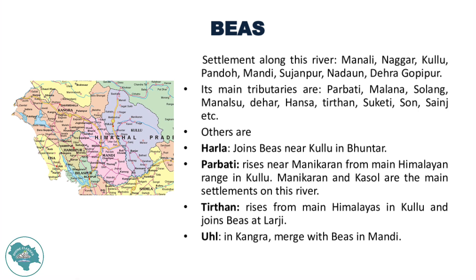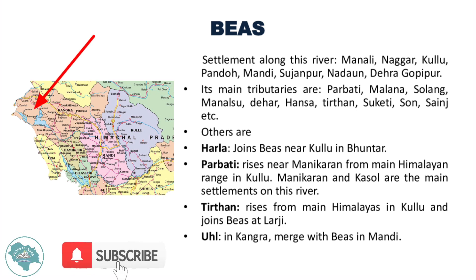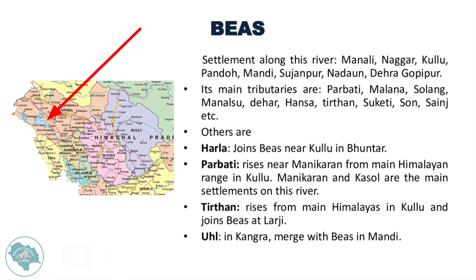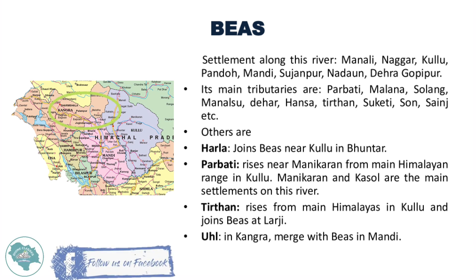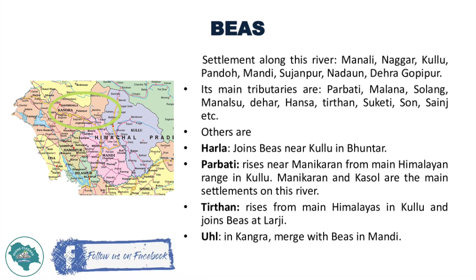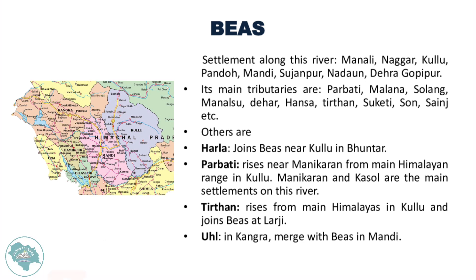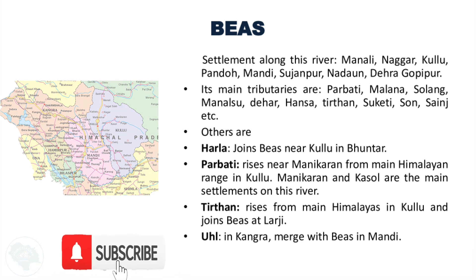Tributaries originating from the Dholadhar range include Awa River in Kangra, Gaj Khad which joins Beas above Pong Dam, Banar River rising near Palampur, Luni, Chakki, Newgal, Patlikuhil, and Suketi. Other tributaries include Harla, Parvati, Tirthan, and Uhal.